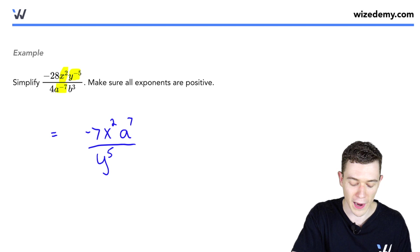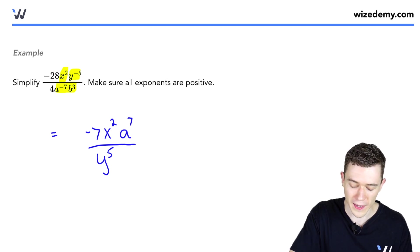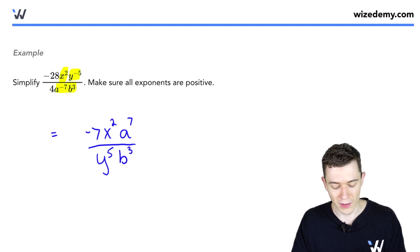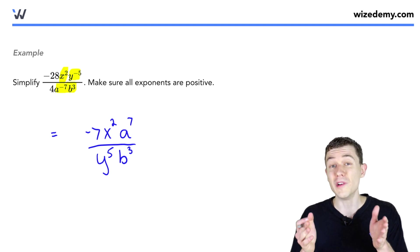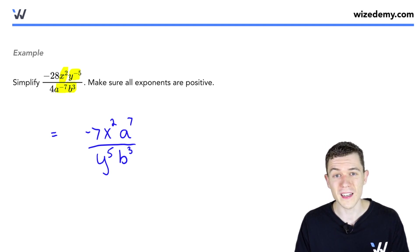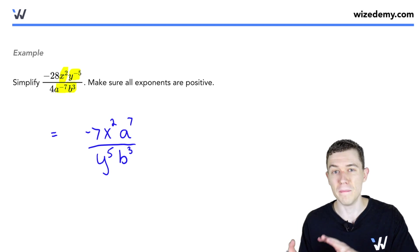Lastly, we have b cubed in the denominator — it already has a positive exponent, so we leave it alone. You'll want to get very comfortable with all of these exponent laws, as they interchange and mix and match.